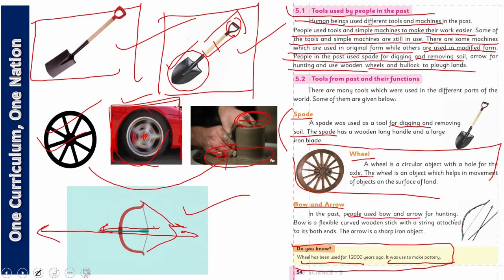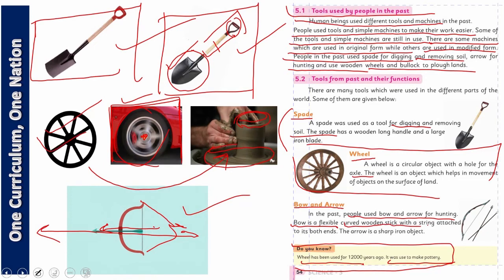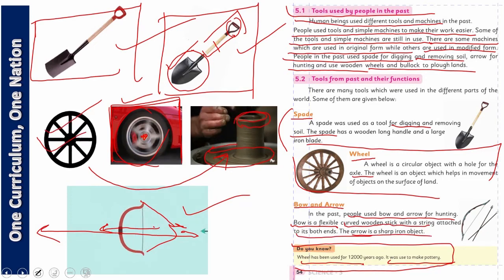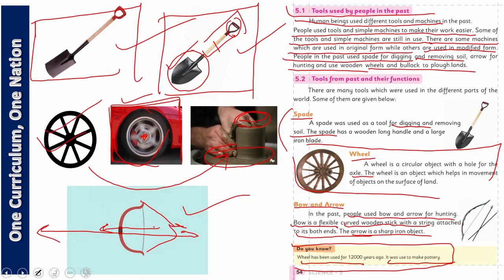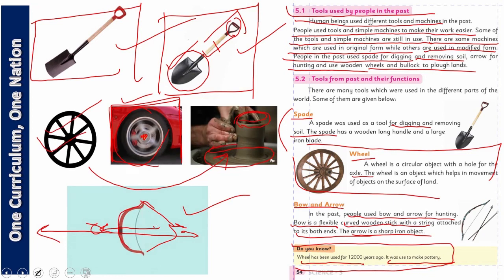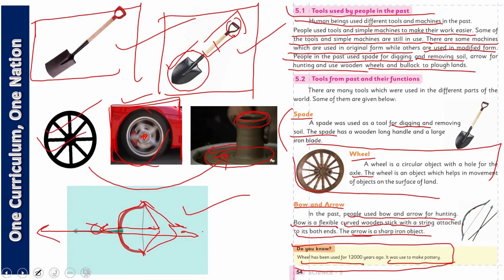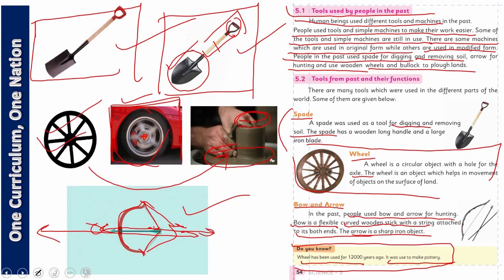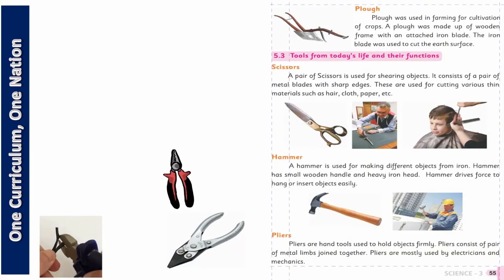What did people use these for? In the past people used bow and arrow for hunting. Bow is a flexible curved wooden stick with string attached to it. The arrow is a sharp iron object. Its head is made of iron and it is very elastic. The string you see here is very strong. When you pull it back, it applies force and shoots forward, hitting its target.